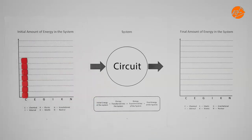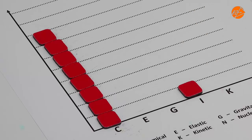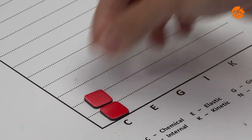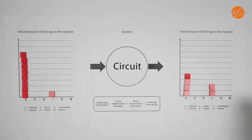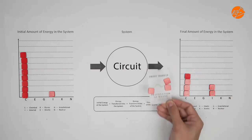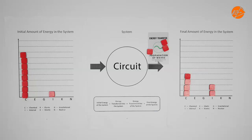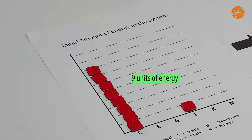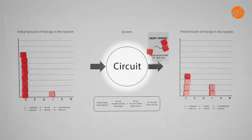If we look at the initial and final states of the circuit side by side, we see 8 units of energy in the chemical store and 1 unit in the internal store on the left, and 4 units of energy in the chemical store and 2 units in the internal store on the right. We also see that 3 units of energy are transferred through the propagation of waves in the form of light and infrared radiation. Notice that we do not consider the energy transferred electrically here, because we are considering the whole circuit as the object of interest.